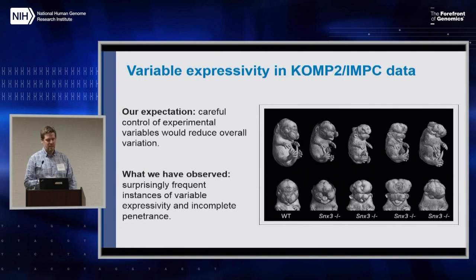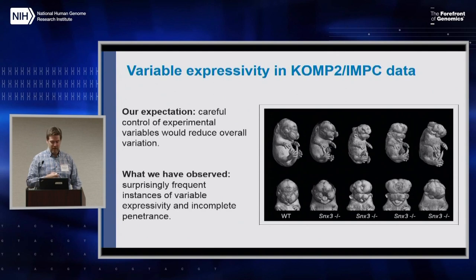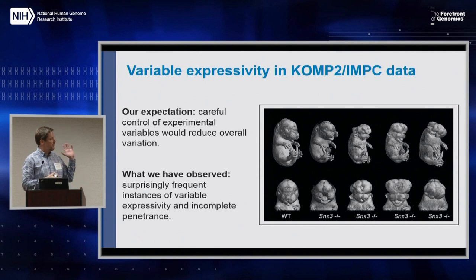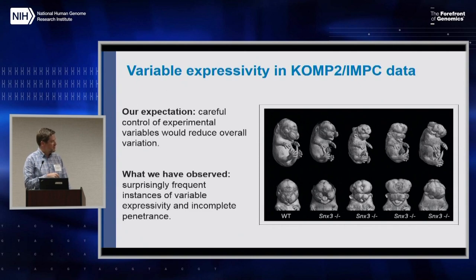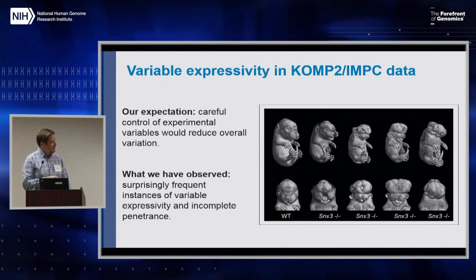This kind of begins with a somewhat simple observation that, at least to my naive expectation, was different than what I expected. The notion is that we're carefully controlling a lot of our experimental variables within the IMPC and Comp2 pipeline, including genetic background, careful SOPs for our phenotyping assays, and environments are as carefully structured as possible. But what we've been observing is surprisingly frequent instances of variable expressivity and incomplete penetrance in our mutants. This is just one of many examples — you can see a normal mouse embryo at E15.5, and four abnormal embryos at E15.5 that are abnormal in very different ways from each other, despite the uniformity of the gene, the allele, the genetic background, and the zygosity.